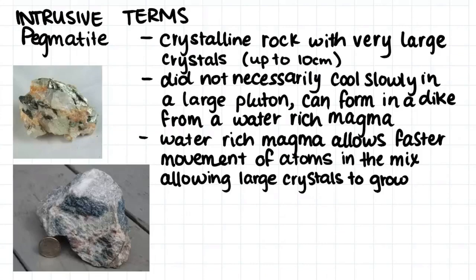The last term used to describe intrusive igneous rock is pegmatite. Pegmatite is a type of igneous rock with very large crystal grains, up to 10 cm across. In this case the large crystals do not necessarily indicate a very long cooling time within a pluton — pegmatite can actually form in dikes and sills. The large crystals form because the molten rock has a very high water content, which allows atoms to move more quickly as the rock cools, enabling larger crystals to form.